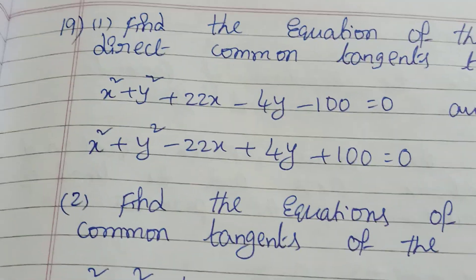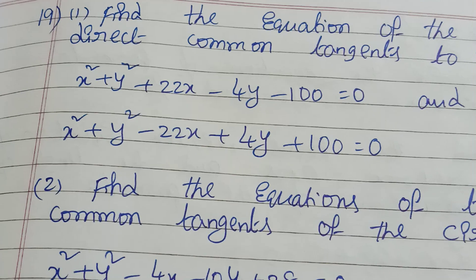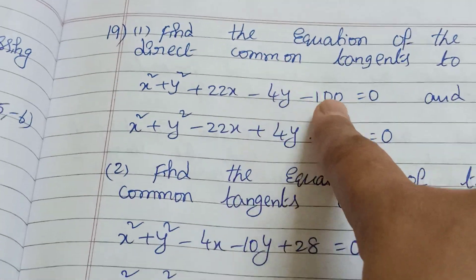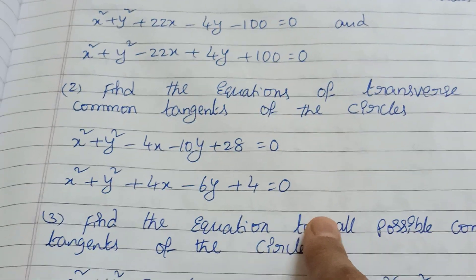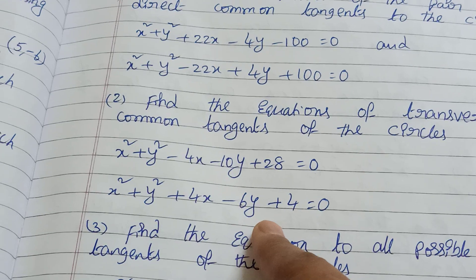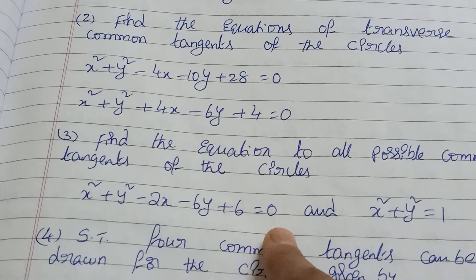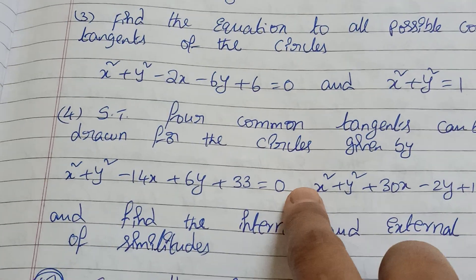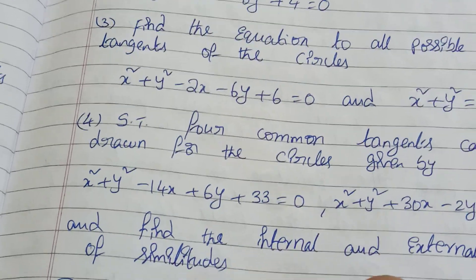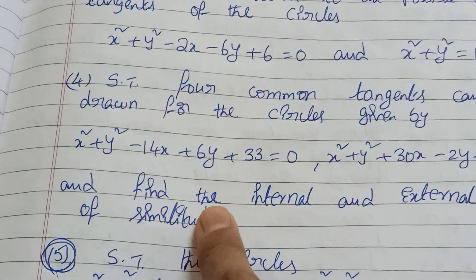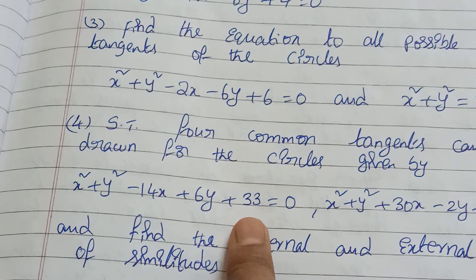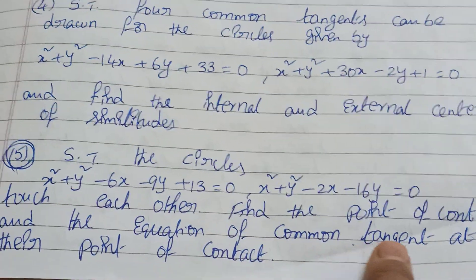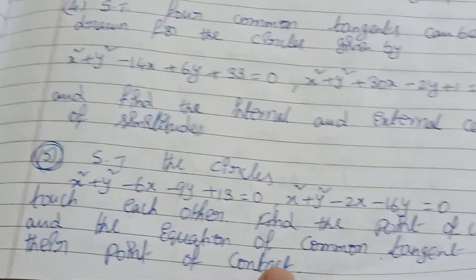If you want to check the Transverse Common Tangent in the video, choose answers. This problem is very important. This is a type of common tangents. Most important is common tangents — Transverse Common Tangents. Let's find out. Internal and external similarities — this is the 19th challenge. I should find the point of contact. This is a common tangent.